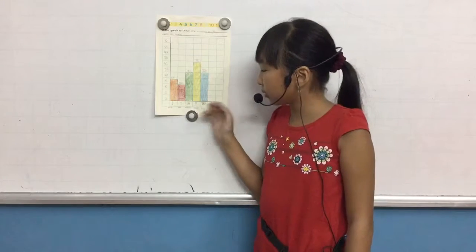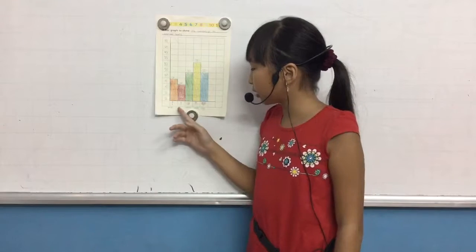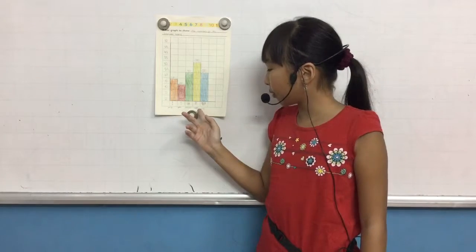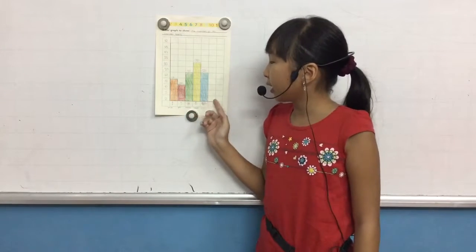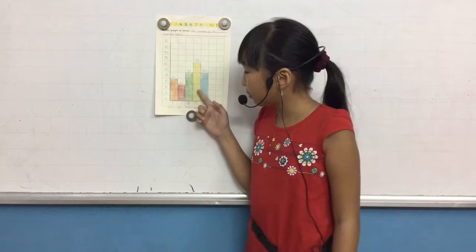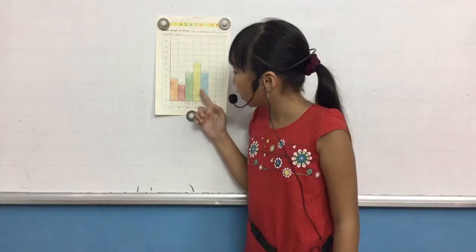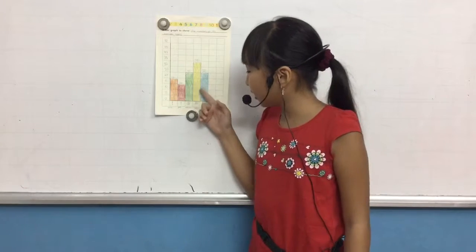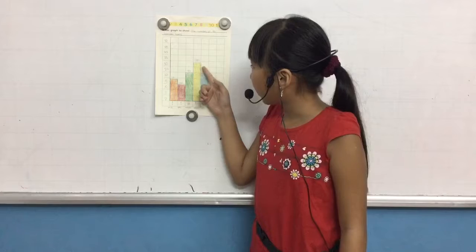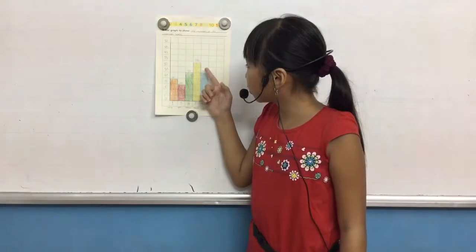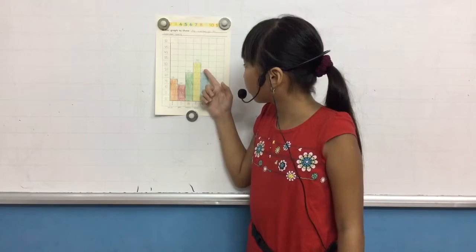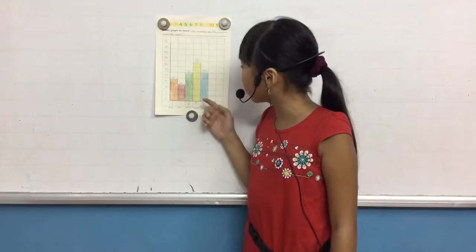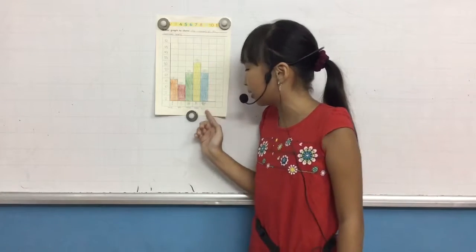The classroom items are pencils, pens, notebooks, rubbers, and bags. There are 18 pencils, 14 pens, 20 notebooks, 32 rubbers, and 20 bags.